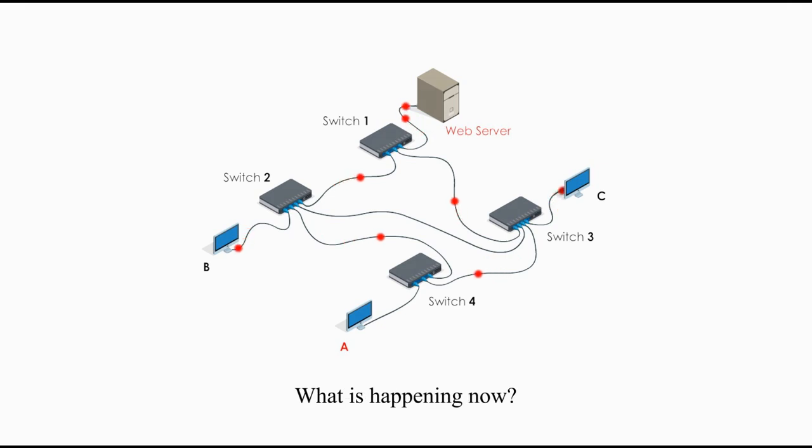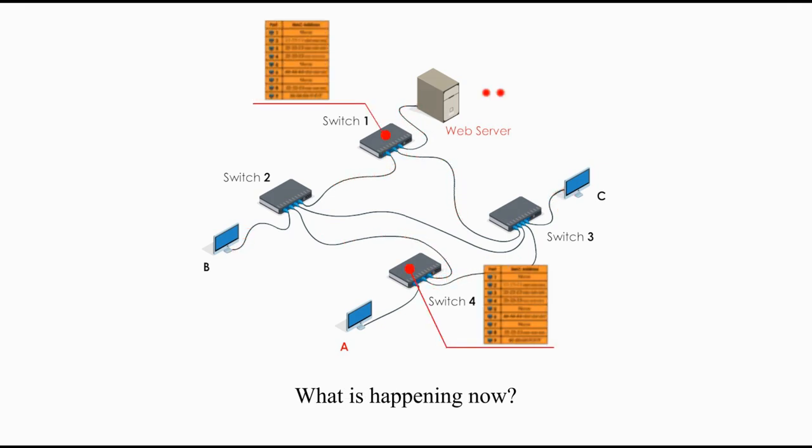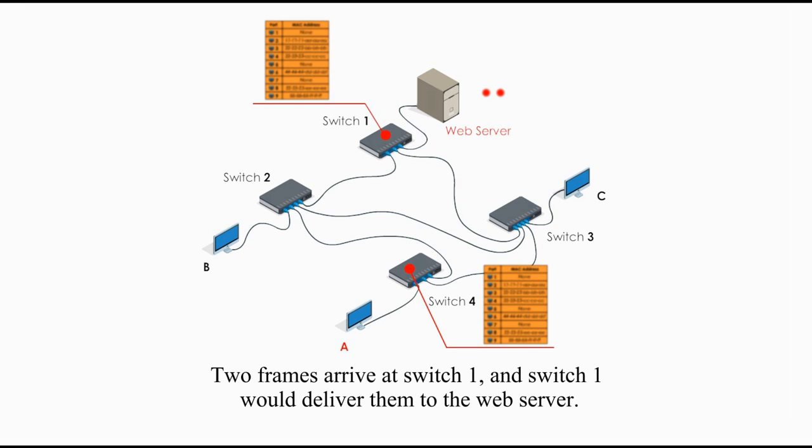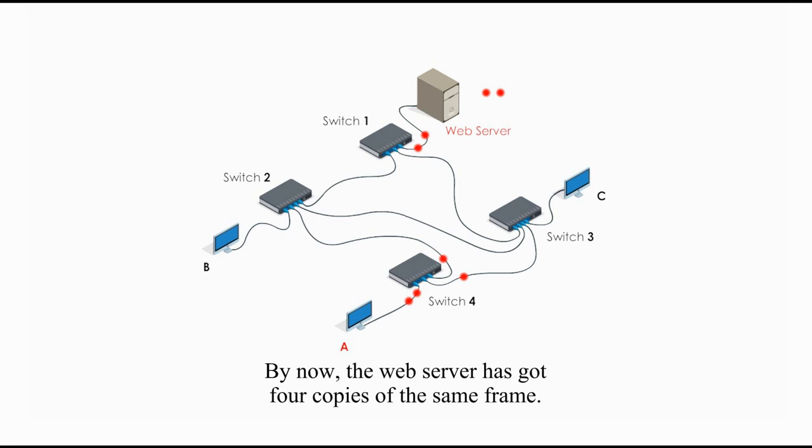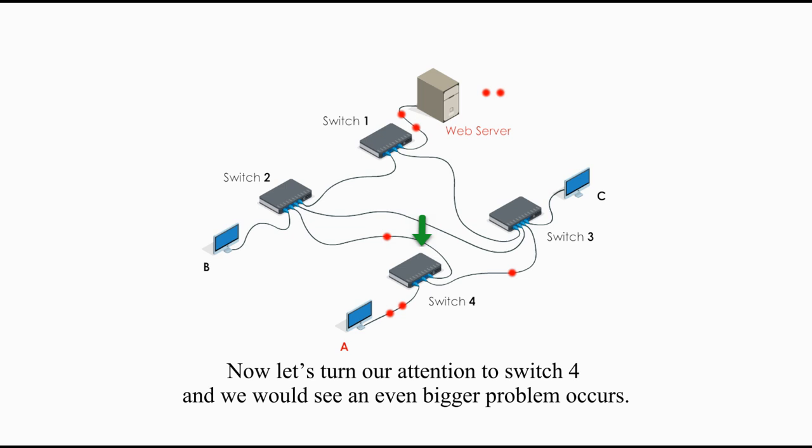What's happening now? Two frames arrive at switch 1, and switch 1 would deliver them to the web server. By now, the web server has got 4 copies of the same frame.